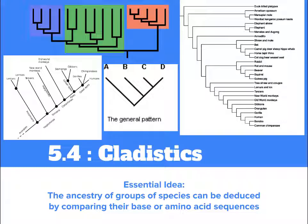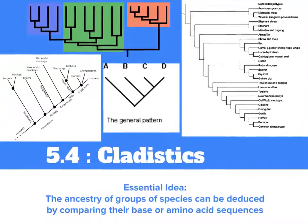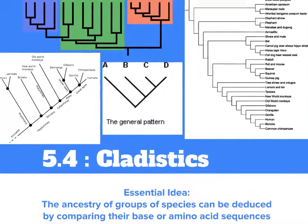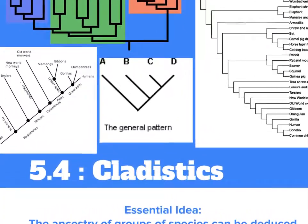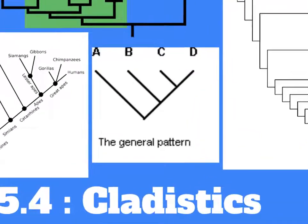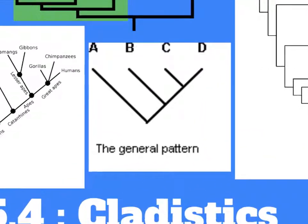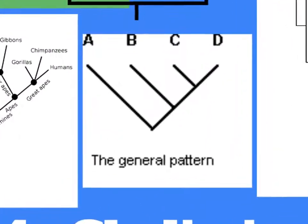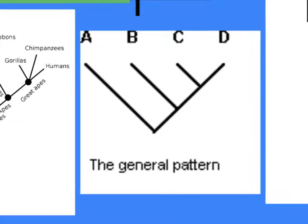You also have other family members that share similar traits, like your cousins. However, these traits are not as similar to you as you are to your sibling. In this case, you share the same ancestor as your cousins — these are your grandparents. Even still, you have other cousins, second cousins, that you share some of the same genetic material and traits. You and your second cousins share an ancestor as well: your great-grandparents.